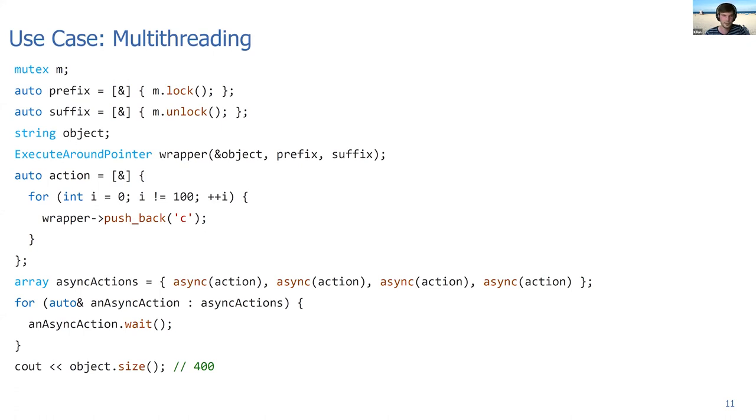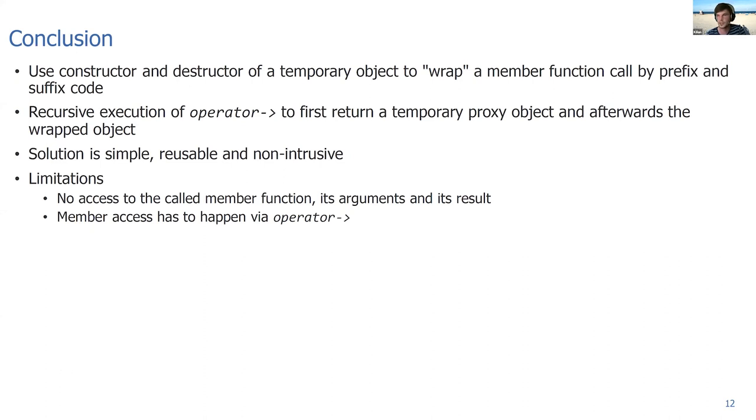The conclusion is that we use the constructor and destructor of a temporary object to wrap a member function call by prefix and suffix code. In our example, we use the operator arrow of the ExecuteAroundPointer where we call the prefix. We execute the operator arrow recursively to first return a temporary object and from that temporary object, then return the wrapped object. The solution is simple, reusable, and non-intrusive. But you have to be aware of some limitations. You have no access to the called member function, no access to any arguments or the result of the function, and you have to do the access via the operator arrow.